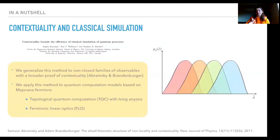If you're going to remember only one minute of this talk, this should be it. In a nutshell, what we did: we connect contextuality to the memory cost of classically simulating quantum processes. There is a very cool paper by Angela Karanje that does exactly this, but it is a little bit restricted because the sub-theories she works with in that paper are closed sub-theories.